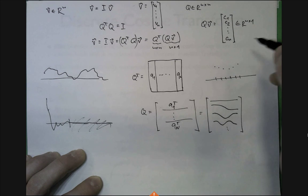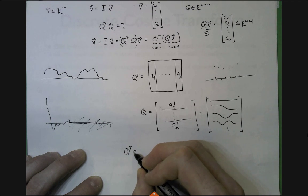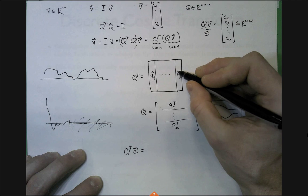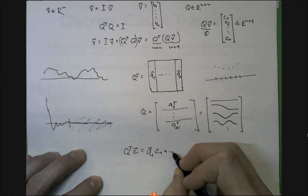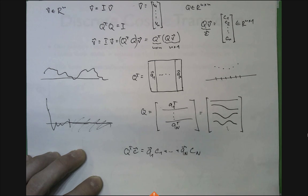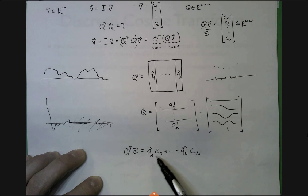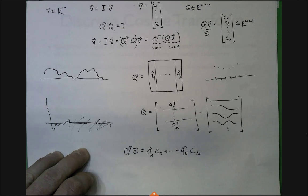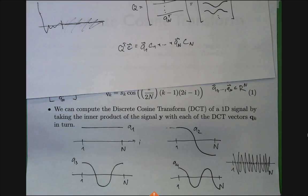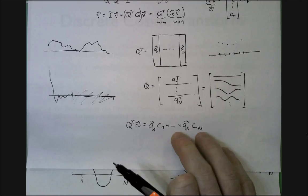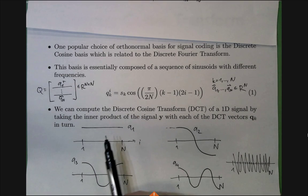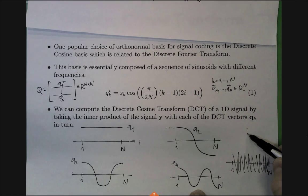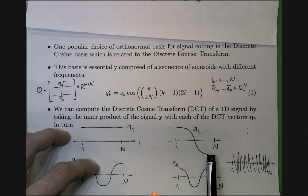Computing Q v gives coefficients c, and Q^T c reconstructs the signal as a linear combination: q_1 c_1 + q_2 c_2 + ... + q_n c_n. The c values tell me the amount of contribution of each cosine wave. The higher the c, the more of that cosine wave is present in my signal. Essentially, the DCT tells you how much of each individual curve is in your signal — it expresses your signal as a linear combination of these basis vectors.